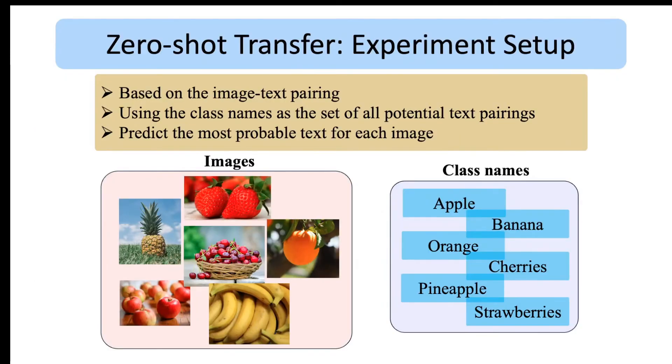For the zero-shot transfer, they set up the experiment as follows. Imagine we are given an unseen dataset which includes a list of images and their class names, and we want to use CLIP for classification in a zero-shot setting. We first extract the set of all possible class names and reuse the image-text pairing capability of CLIP to map each image to its correct text, which is in fact its class name.